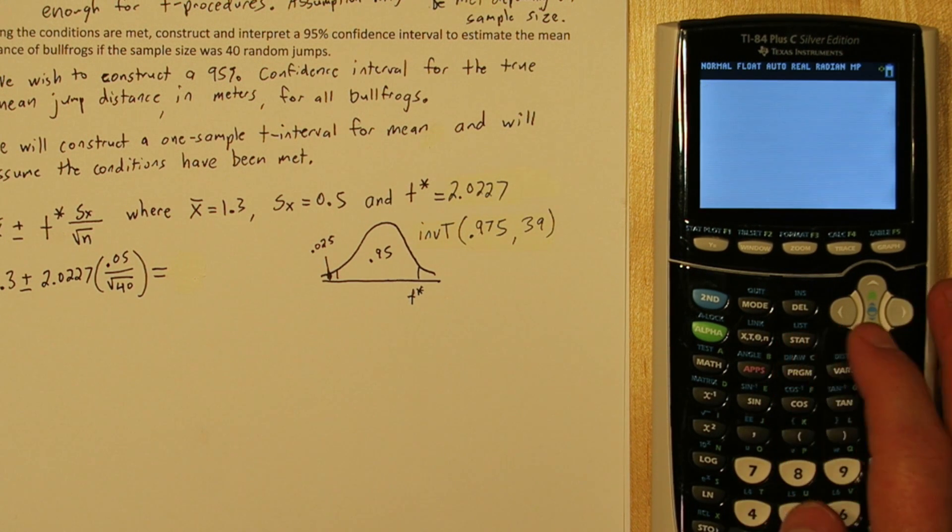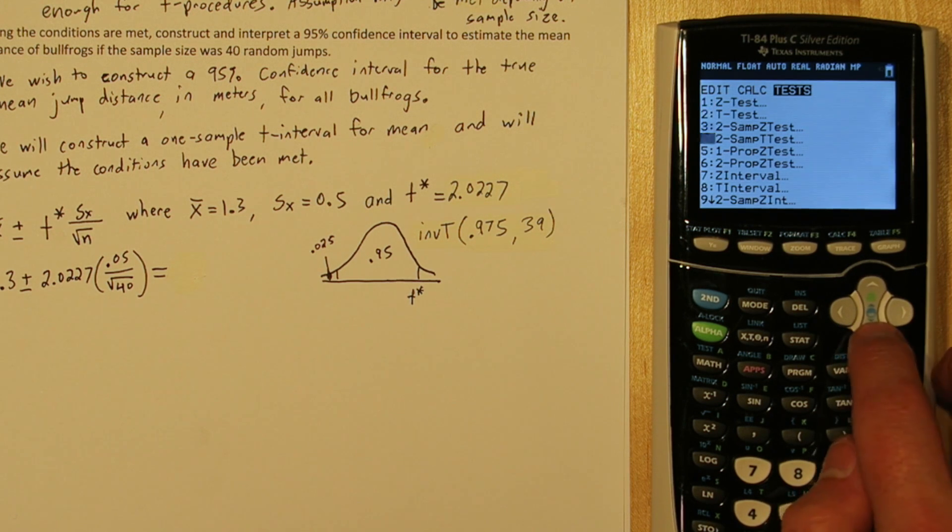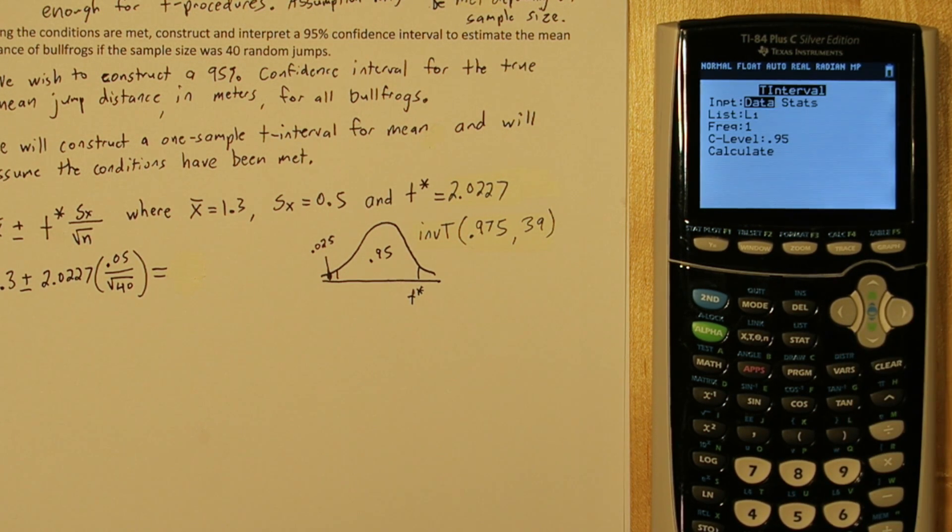If you press the stat button and go over to test, scroll down to T interval. Now you can either input raw data or the stats. We have the summary statistics, not the raw data.